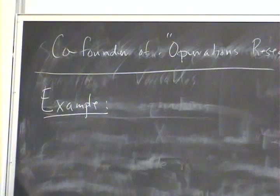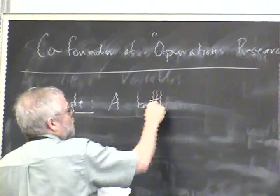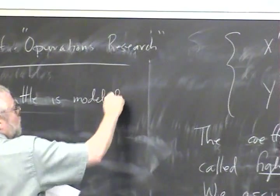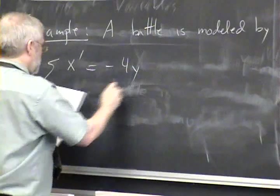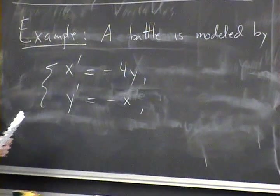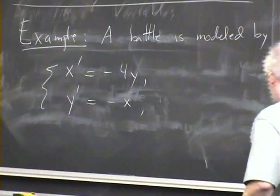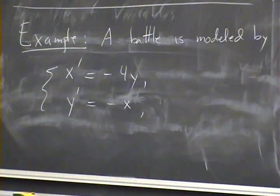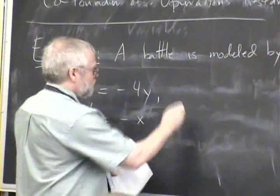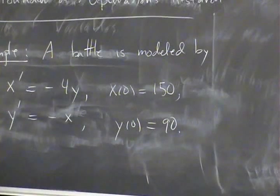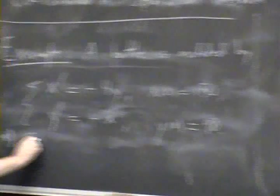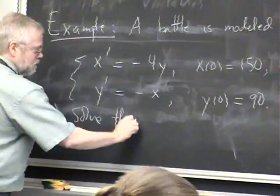Let's now do an example. A battle modeled by X' = -4Y, Y' = -X. You can see from here that the Y-men are much better fighters than the X-men because they're killing off as many as the quotient here. To compensate for that, let's make sure that there are more X-men than Y-men. X₀ = 150, Y₀ = 90. Let's see what happens. Solve these in parametric form, determine who wins, and the losses.